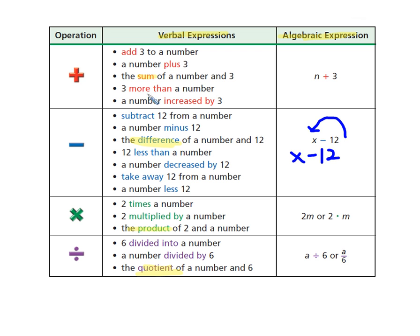Same here if you see 3 more than a number. So you have the number first. We don't know what the number is. It's a variable. And you're adding 3 to it. So that's confused us in the past.